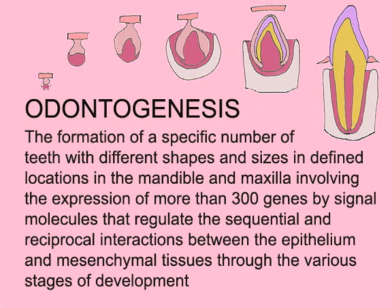Tooth development or odontogenesis is the formation of a specific number of teeth with different shapes and sizes in defined locations in the jaws, involving the expression of more than 300 genes by numerous signaling molecules that regulate its sequential and reciprocal interactions between the epithelial and mesenchymal tissues through the various stages of development.